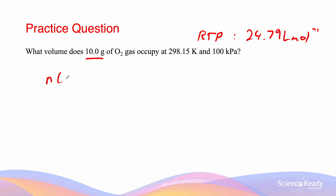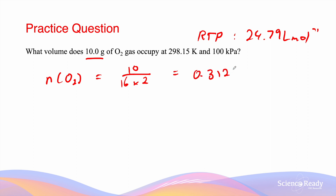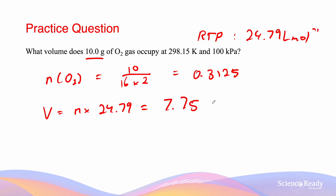The first thing we need to work out is the number of moles of O₂, which is equal to 10 divided by the molar mass of O₂ — which is 16 times 2 because it is diatomic — and that equals 0.3125. From here we work out the volume by multiplying n by the molar volume: 0.3125 multiplied by 24.79 equals 7.75 liters, given in three significant figures.